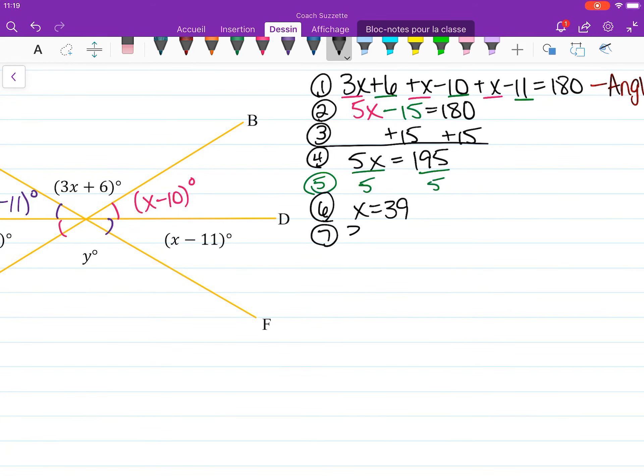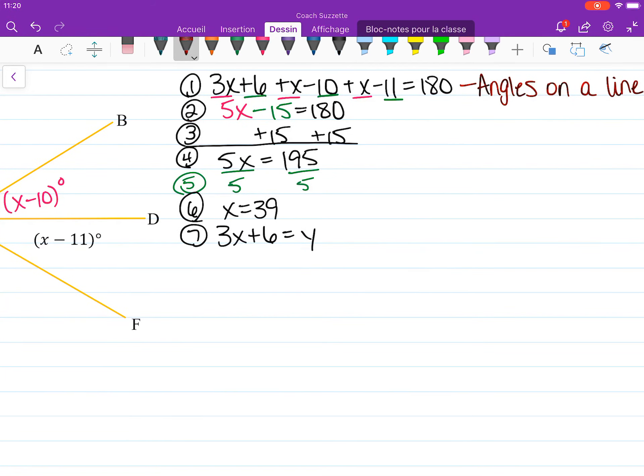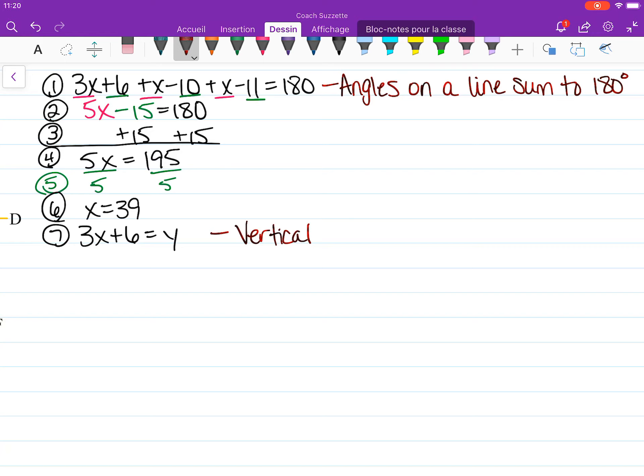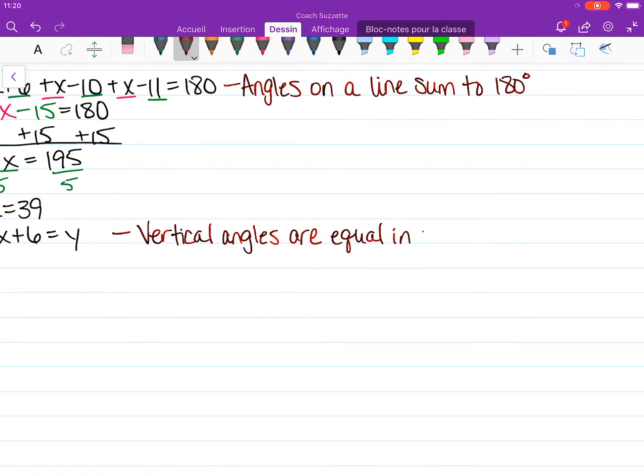So 3x plus 6 is equal to y. The vertical angles are equal in measure.